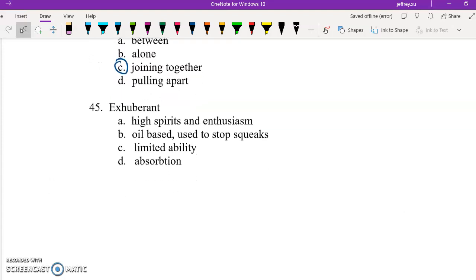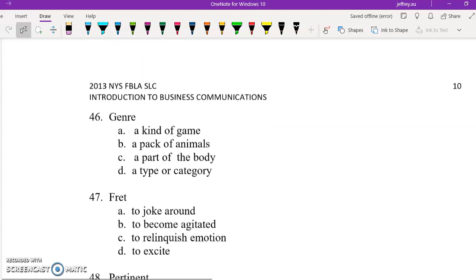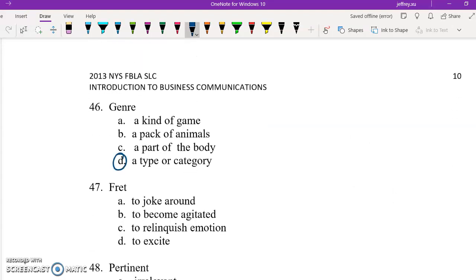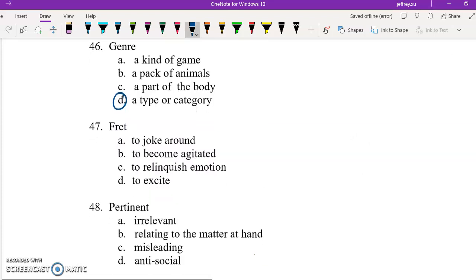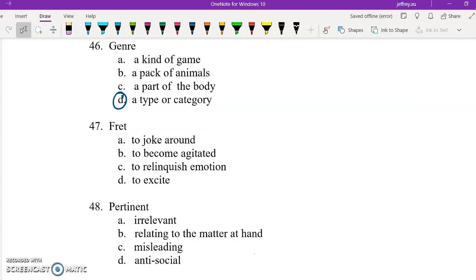45, exuberant means high spirits and enthusiasm. 46, genre means a type of category, a type or category. So if you think back to English class, the different genres of books that you've been exposed to. 47, if you fret about something, you're anxious or worried about that thing. So you're agitated.